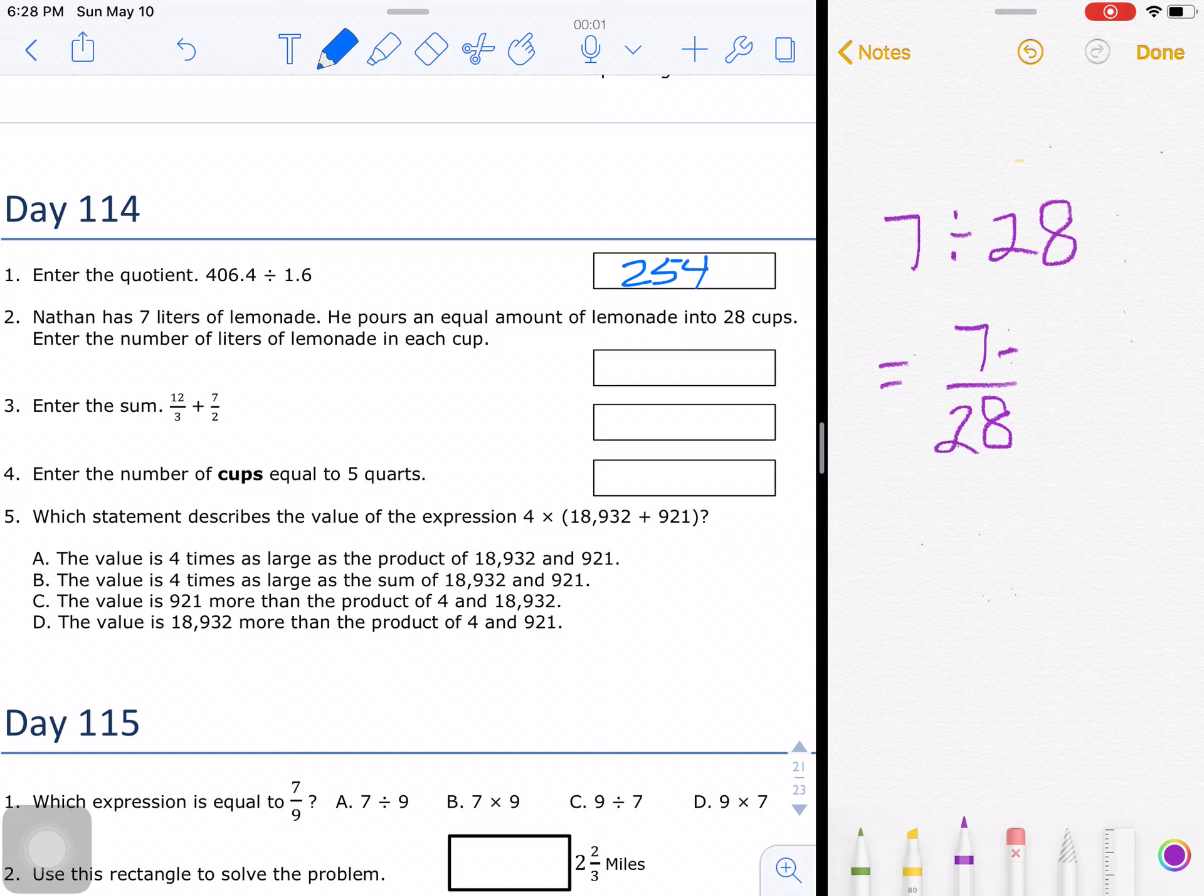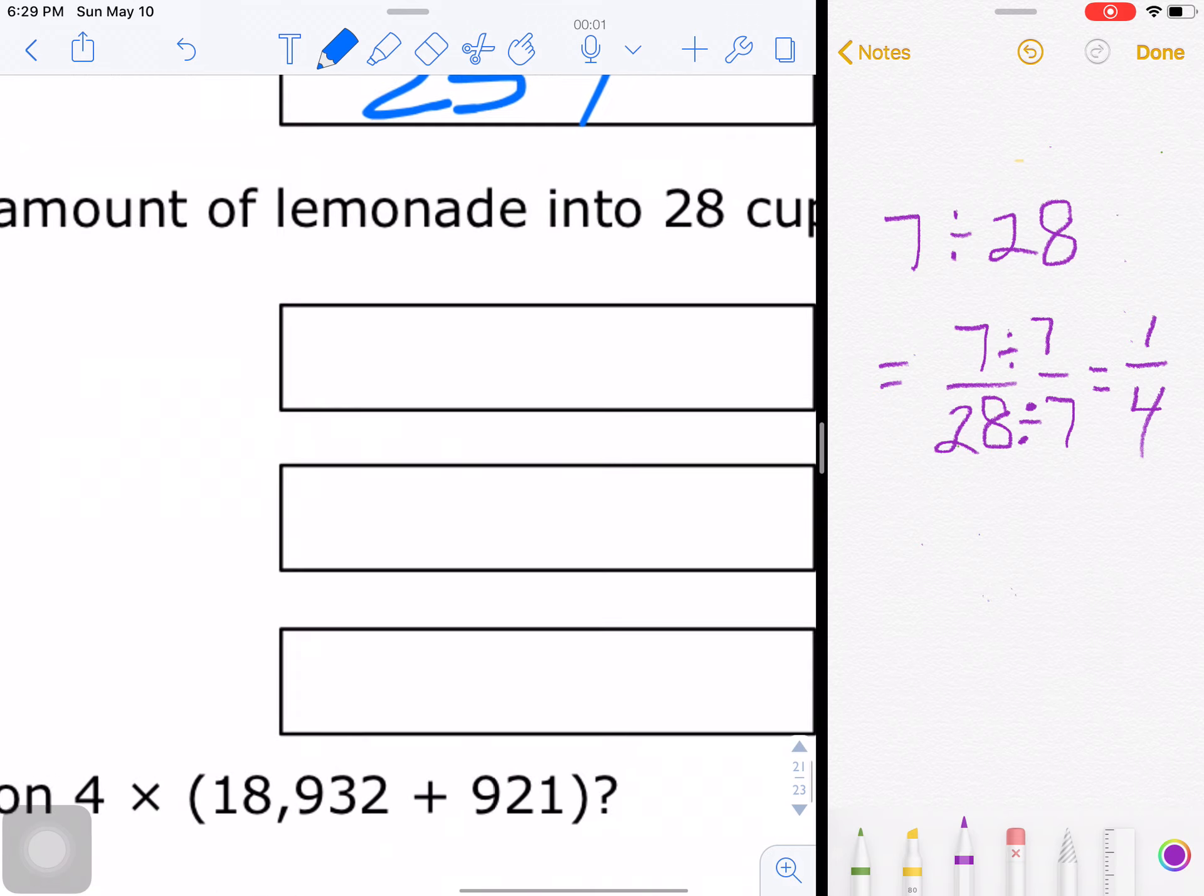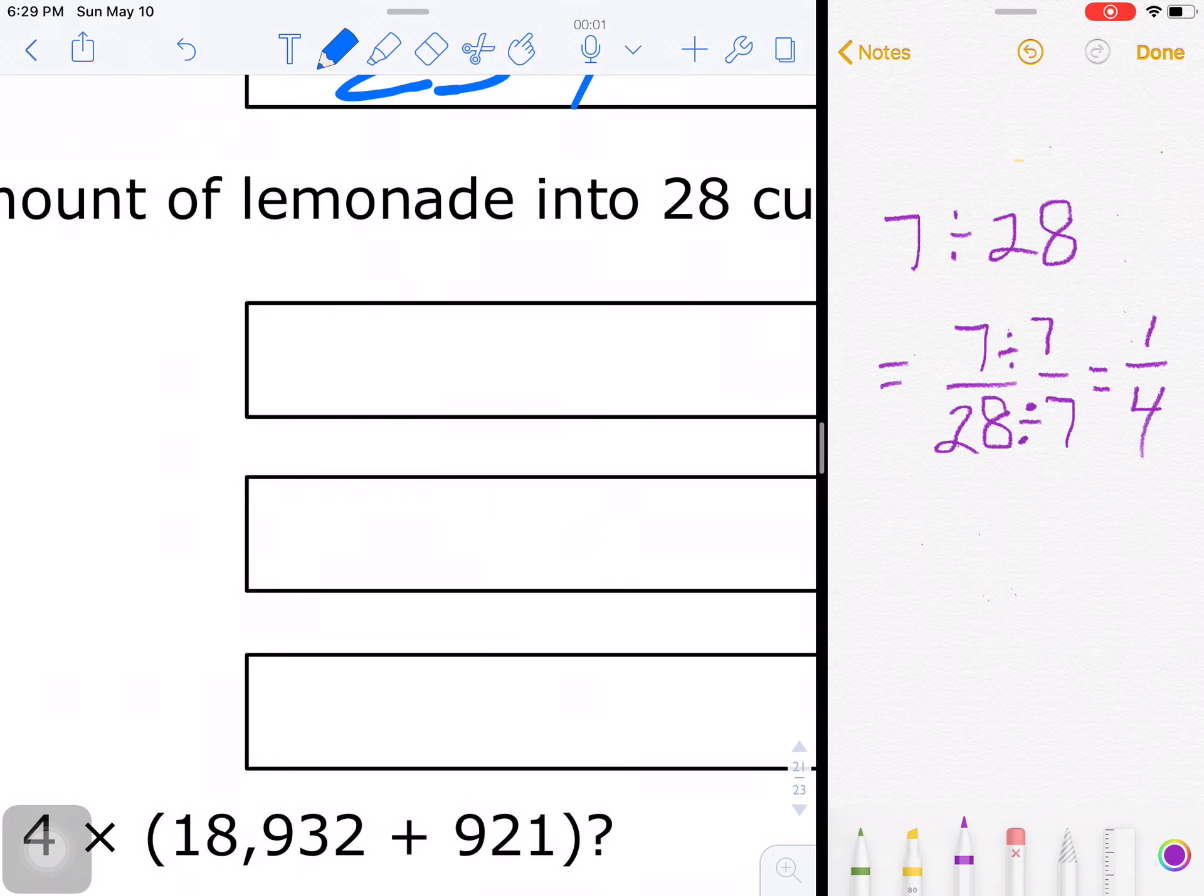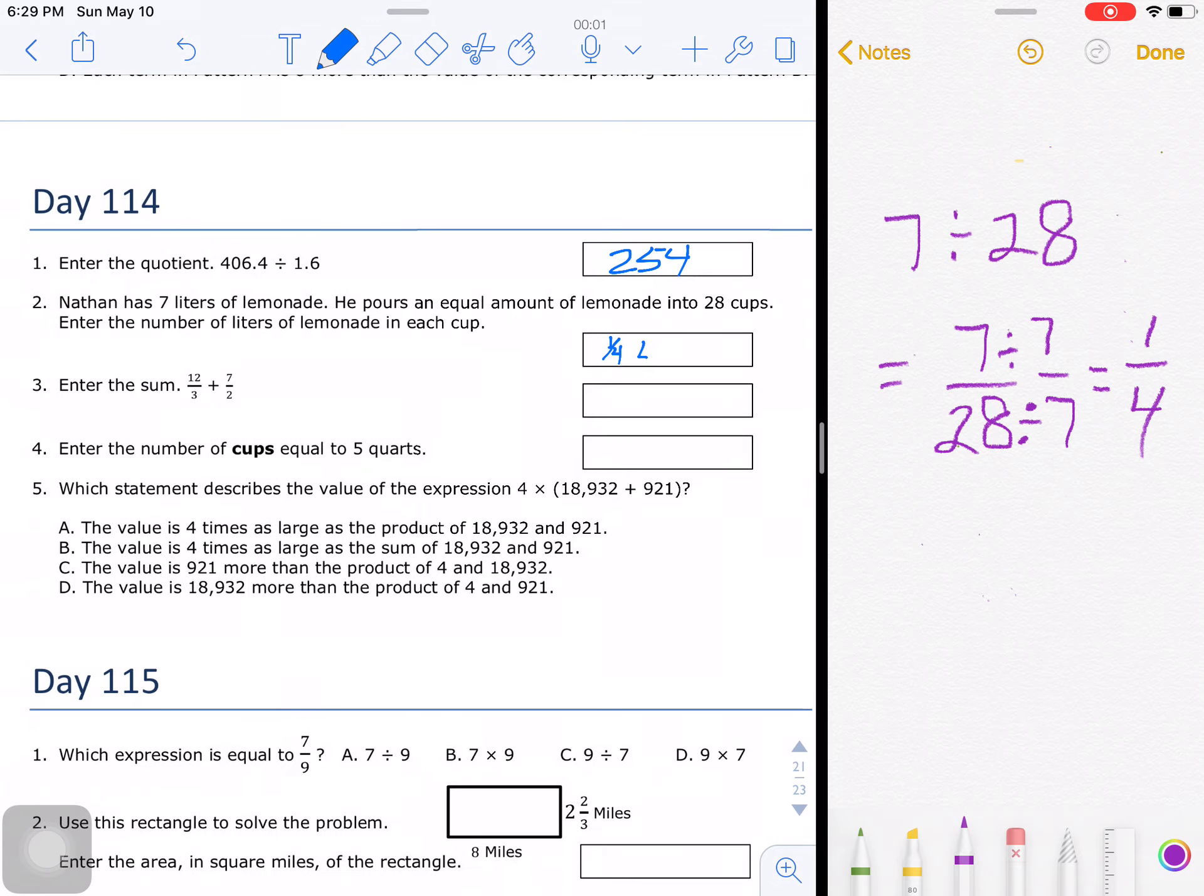We can simplify this now because we're so good at understanding fractions. We know that if we divide that by 7/7, we're left with 1/4. So Nathan has, or each cup has 1/4 liter of lemonade in it.